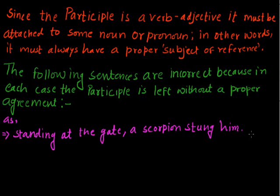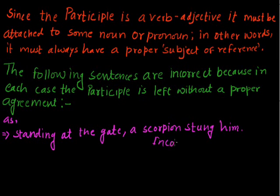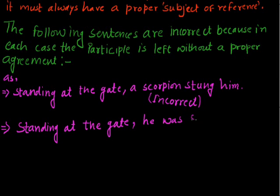This creates a lot of confusion. The sentence reads as if the scorpion was standing at the gate. So, it must be made clear for whom we are using the participle. The correct sentence would be: 'standing at the gate, he was stung by a scorpion.' Now it is clear that 'he' was standing at the gate and at that time was stung by a scorpion. So here 'he' is the proper subject of reference for the participle.